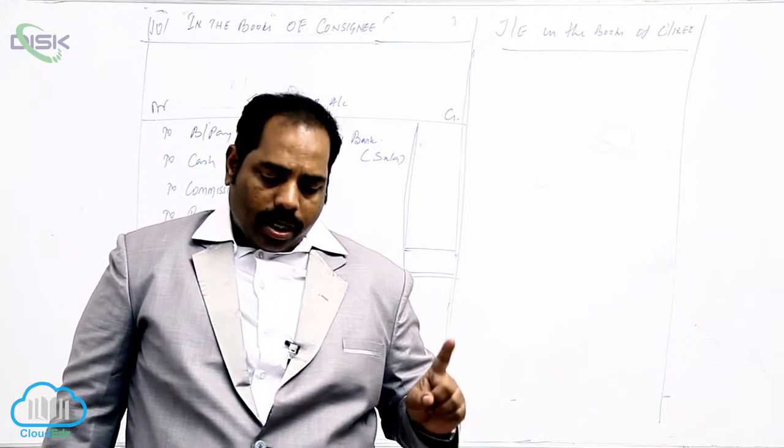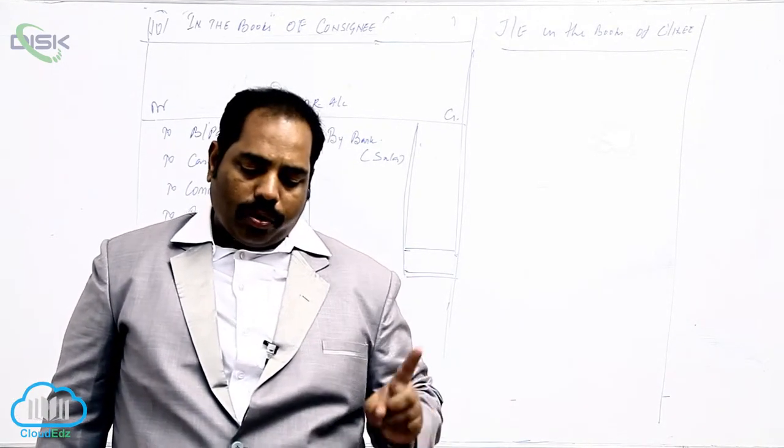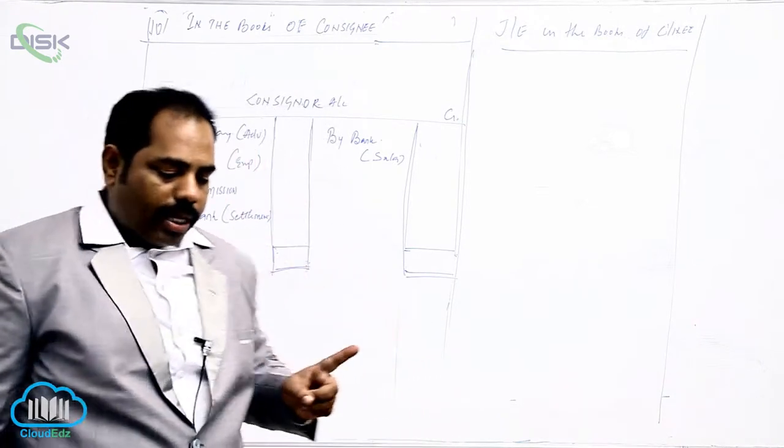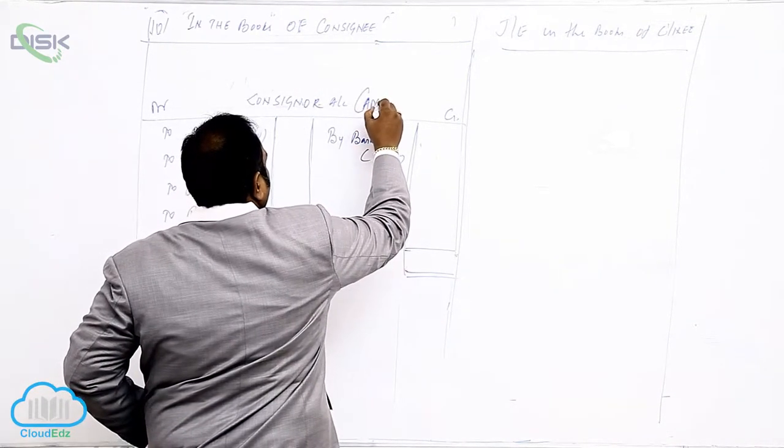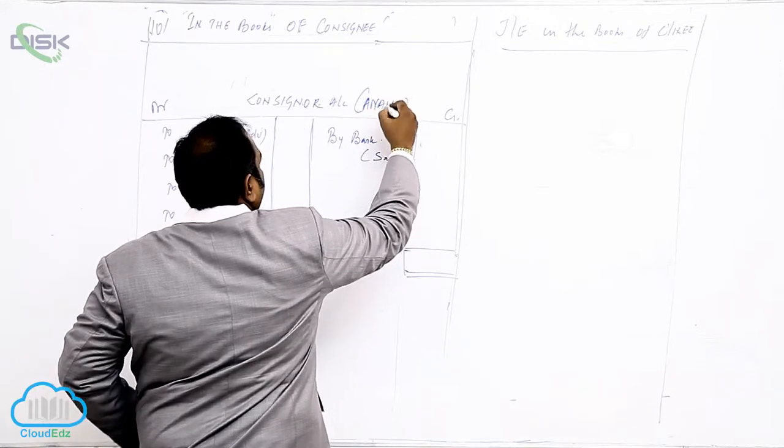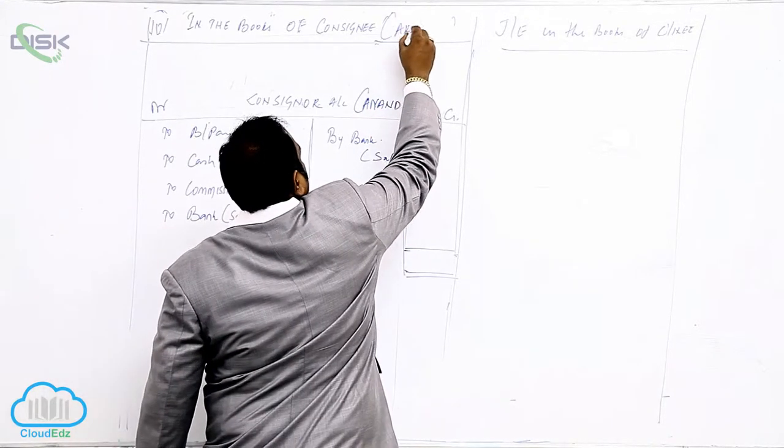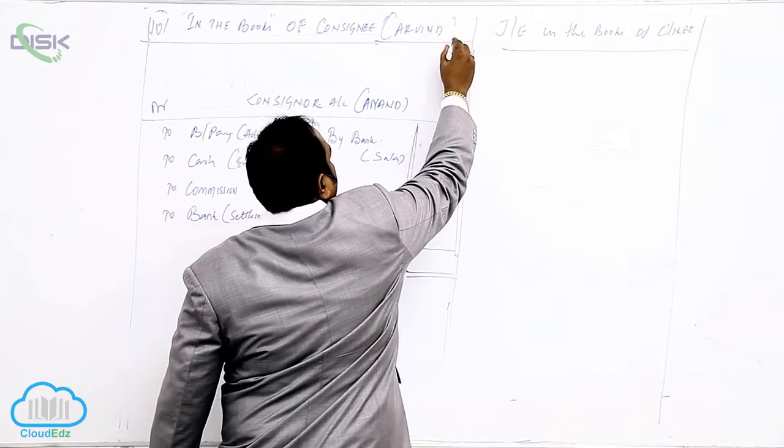Anand of Hyderabad consigned goods worth rupees 20,000 to his agent Arvind. So who is the consignor? Anand. So we have to open Anand's account in books of Arvind. In the books of Arvind is what? Consignee. So we are writing in the books of consignee.